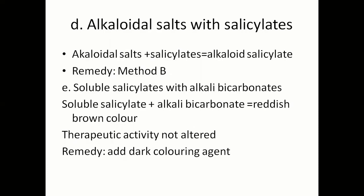Next is alkaloidal salts with salicylates. When alkaloidal salts are combined with salicylates, the alkaloid and salicylate combine to form an alkaloid salicylate. For example, strychnine chloride plus sodium salicylate gives strychnine salicylate plus sodium chloride. Here an indiffusible precipitate is formed, so you use Method B.